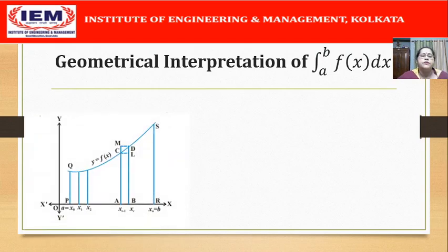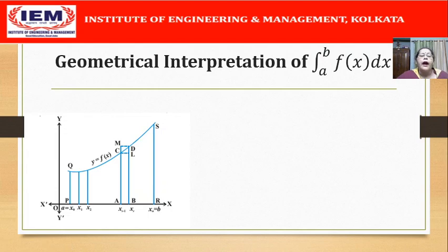Consider the figure where y = f(x) is plotted and we integrate over the interval from x = a to x = b. We subdivide the interval [a, b] into n equal parts by the points x₀ = a, x₁, x₂, ..., xᵣ₋₁, xᵣ, ..., xₙ = b. The length of each sub-interval is h, which equals (b − a)/n.